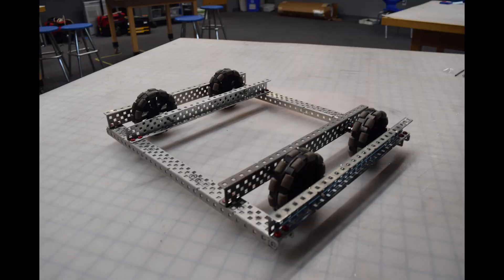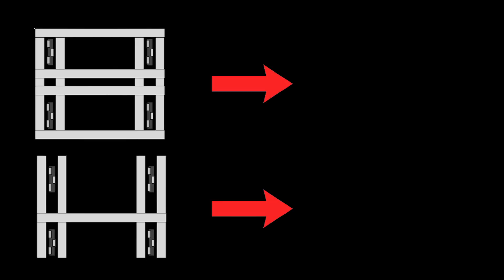While we're making the chassis stronger, let's talk about structure. The more places where the C channels are connected, the less the overall structure will bend and shift.